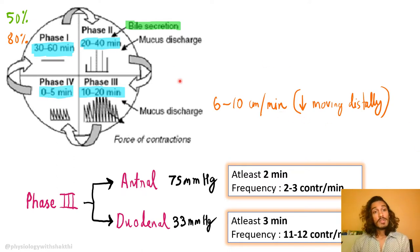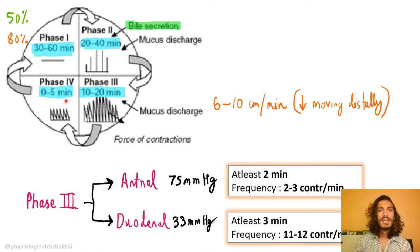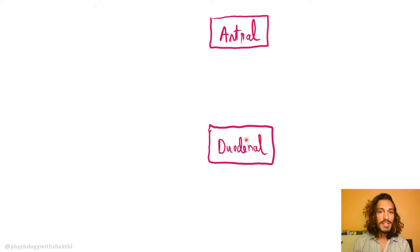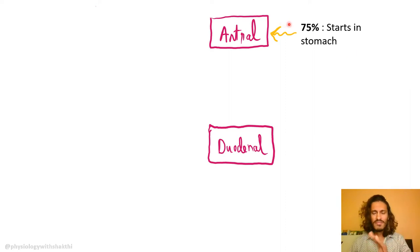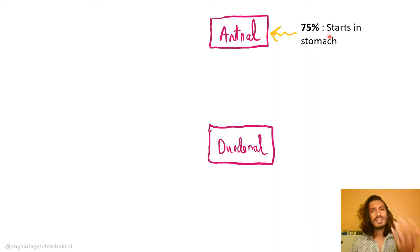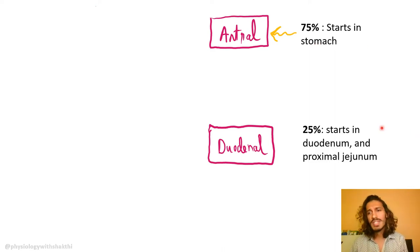Phase four, the transition from Phase three back to Phase one, takes around zero to five minutes. Regarding the site of initiation, approximately 75% of Phase three MMC cycles start in the stomach — some articles report 71%, others 78% — and about 25% start in the duodenum and proximal jejunum.